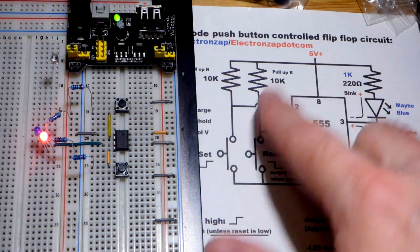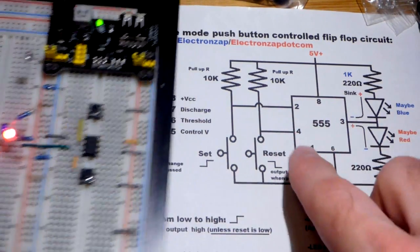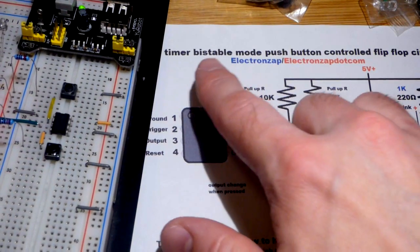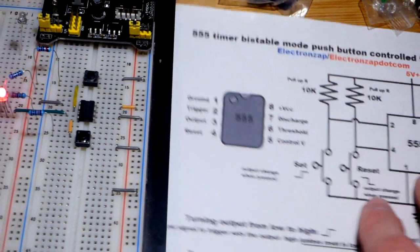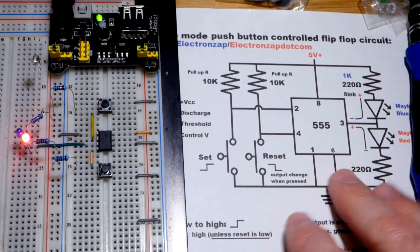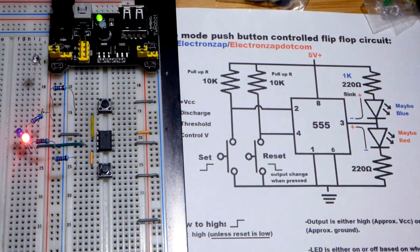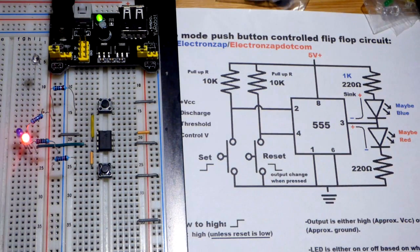In my last video, we went over this circuit here. It is a 555 timer wired in bistable mode. There you can see there is the pin layout. I did a step-by-step build of it. I'll try to remember to link it in the description if this looks confusing to you.